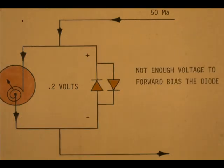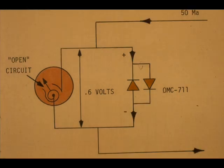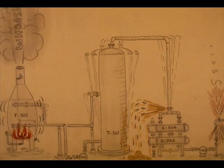Neither diode conducts since there is not enough voltage present to forward bias them. So all the current goes through the field indicator. But if the indicator opens up, 65 volts is developed across the open circuit. 65 volts is more than enough voltage to turn on the diode. Current flows through the diode and the loop continuity is preserved. About six-tenths of a volt remains across the diodes. The meter saver is actually a loop saver. It prevents loss of a process input and resulting unit upset.